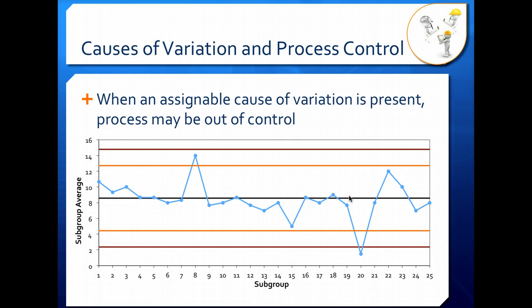When you do have an assignable cause of variation, as seen in this point here and this point here, possibly also in this point here that may be just random variation that's particularly high. But the assignable cause of variation shows clear out-of-control behavior.